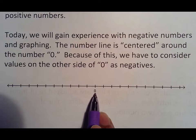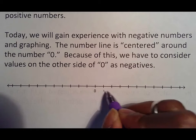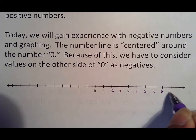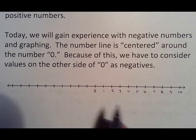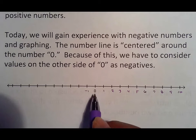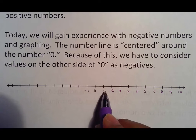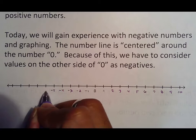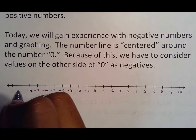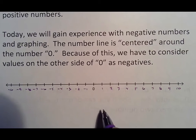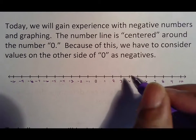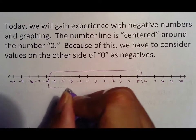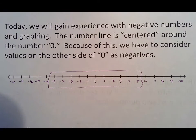Because zero is the center, we have to consider values on the other side of zero as negatives. We know how to count one, two, three, four, five, six, seven, eight, nine, ten — but from zero you now go backwards one step. Backwards being the opposite of going forward. I recommend you take a moment to copy this in your notes — going from zero to five in both directions will help you understand how negatives and positives work together.